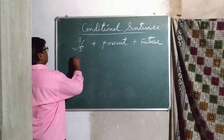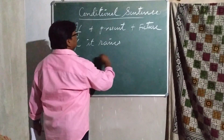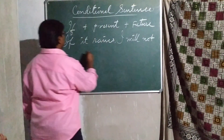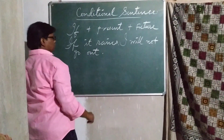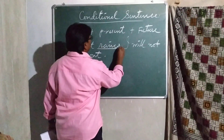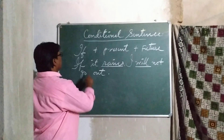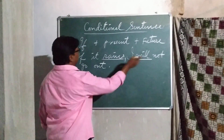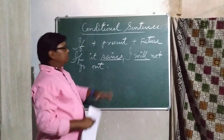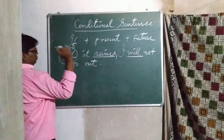Let us make Sentence 1. If it rains, I will not go out. Do you see this sentence? 'Rains' is used as simple present tense and 'will' is used as simple future tense. So 'if it rains, I will not go out' — these are the conditions it is made. The first condition is: if it rains.